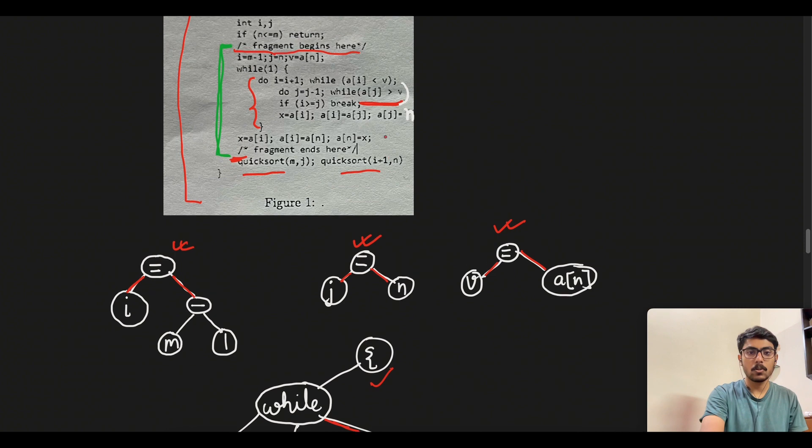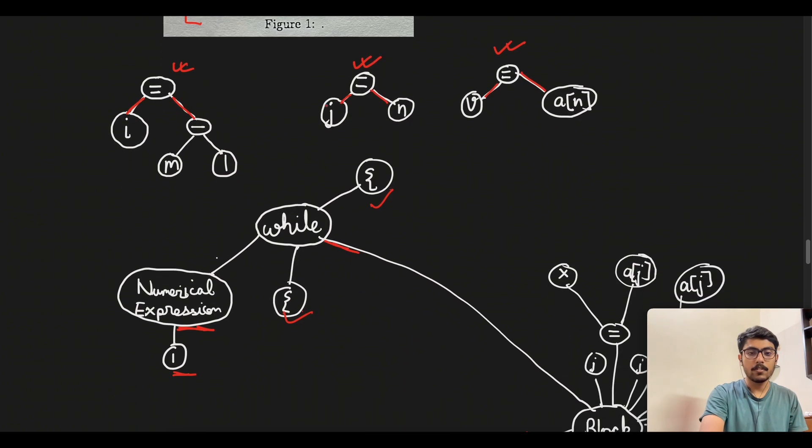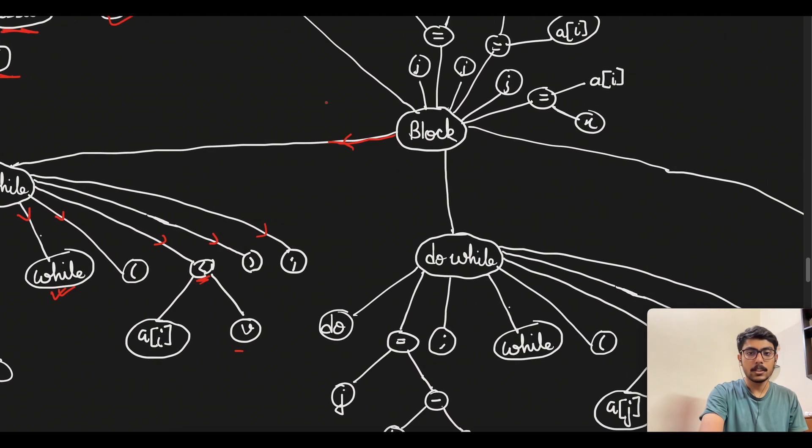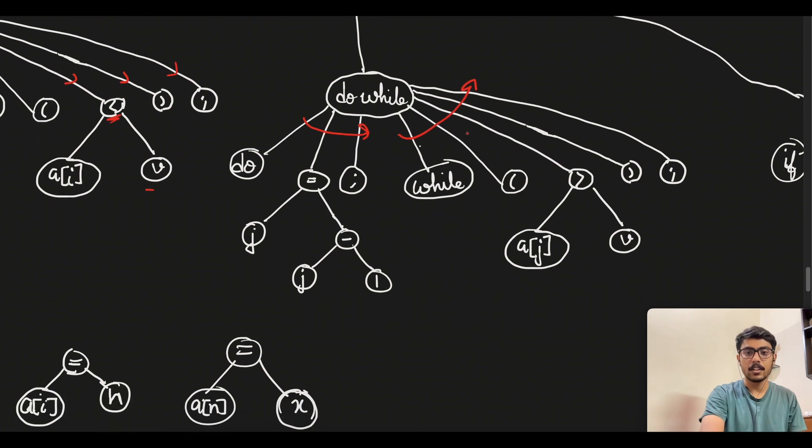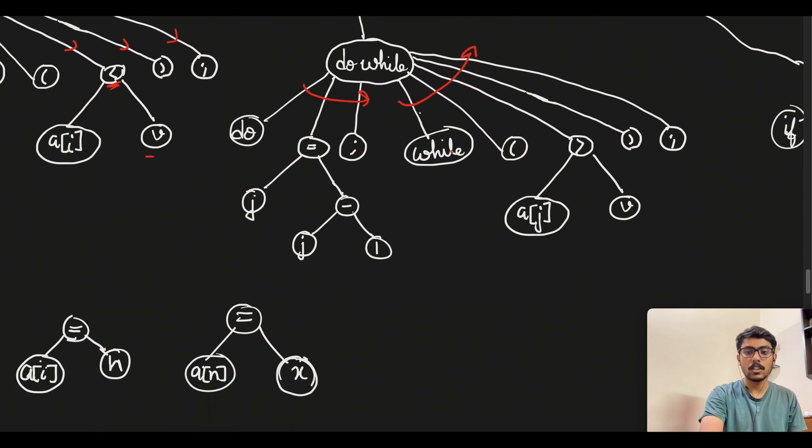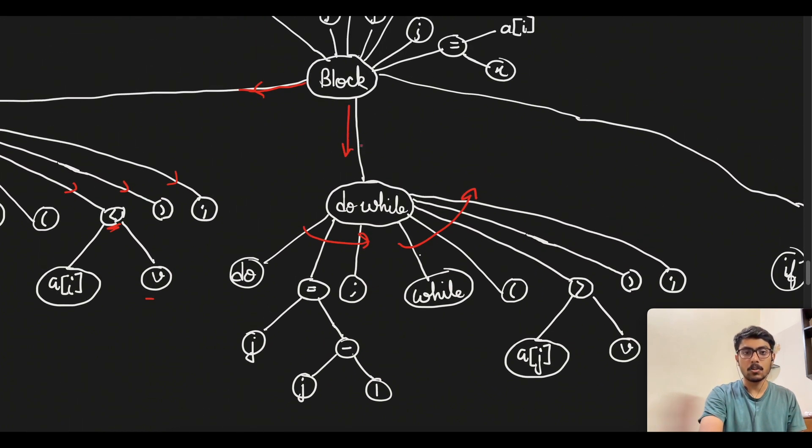After this do while loop, if we go back to the code we see that there is another do while loop here. For that again we will have to write this particular subtree which will have the do here, and once the do is completed then we will have the while here. It's just the same, only the code processes are different as per the quicksort algorithm.